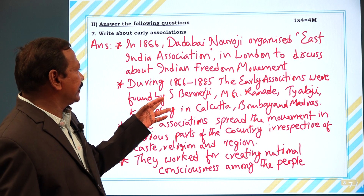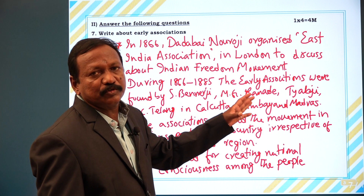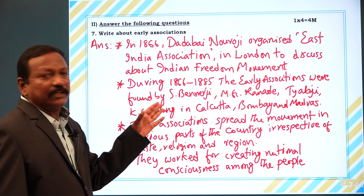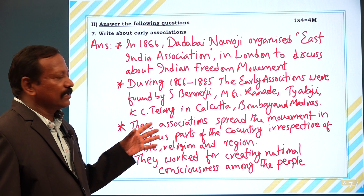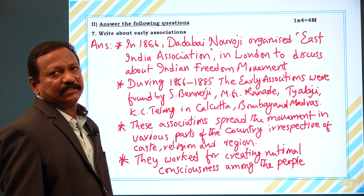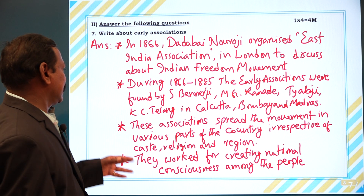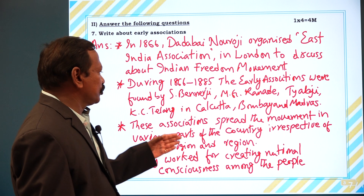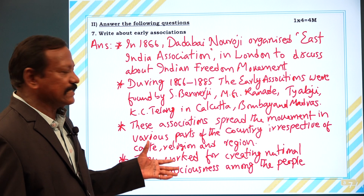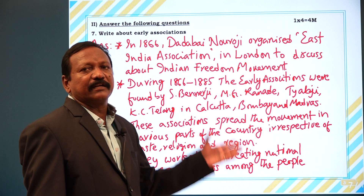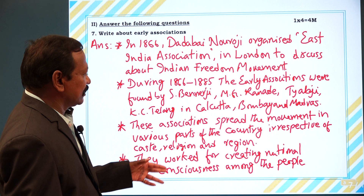During 1866 to 1885, the early associations were founded by Surendranath Banerjee, M. G. Ranade, Telang in Calcutta, Bombay, and Madras. In these three cities, the early associations were first established. These associations spread the movement in various parts of the country, irrespective of caste and religion. They worked for creating national consciousness and domestic awareness.